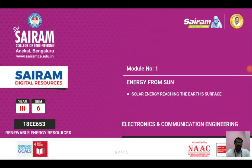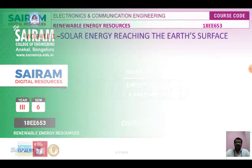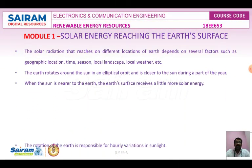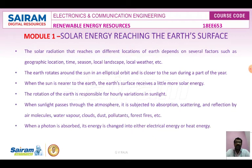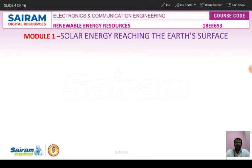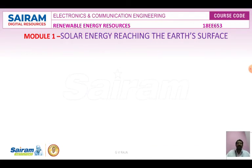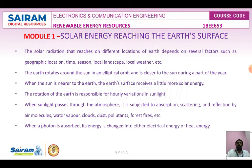Today's class we are going to see solar energy reaching the Earth's surface. Solar radiation is an electromagnetic radiation emitted by the Sun. The Sun is converting its mass into light particles called photons. The solar radiation that reaches different locations of the Earth depends upon several factors, for example geographical location, time, season.